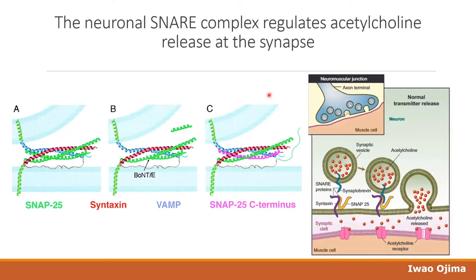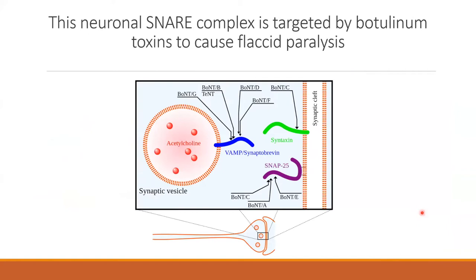The neuronal SNARE complex including SNAP25 is very important for neuronal function because it regulates acetylcholine release at the synapse. When these three proteins come together — very similar to SNAP29 — they mediate neurotransmitter release at the neuronal synapse. This is one of the main ways neurons signal to one another, so if you inhibit this process you strongly inhibit neuronal function. We know this neuronal SNARE complex is targeted by botulism toxins — serotypes A through F all target different members of this complex — to cause flaccid paralysis.